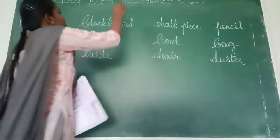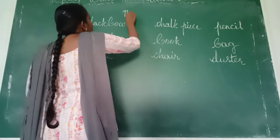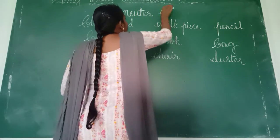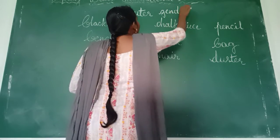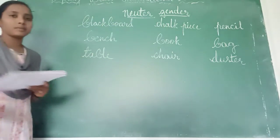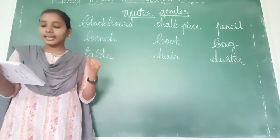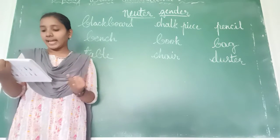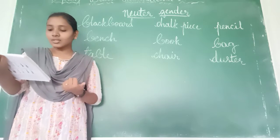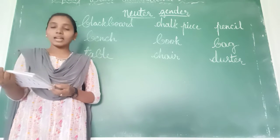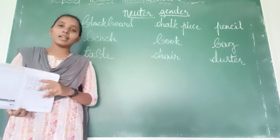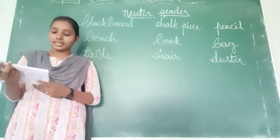These non-living things are neuter gender. They have given some examples — see in the page. Bottle, pan, chain, telephone, house, book, car, spoon, mug. These all are the neuter gender.